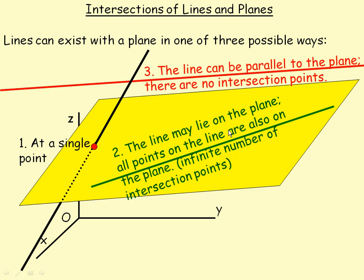Back to scenario two for a moment: every point that's on the line is on the plane. You cannot turn that around and say every point on the plane is also on the line, because there are lots of points on the plane that are not on the line.